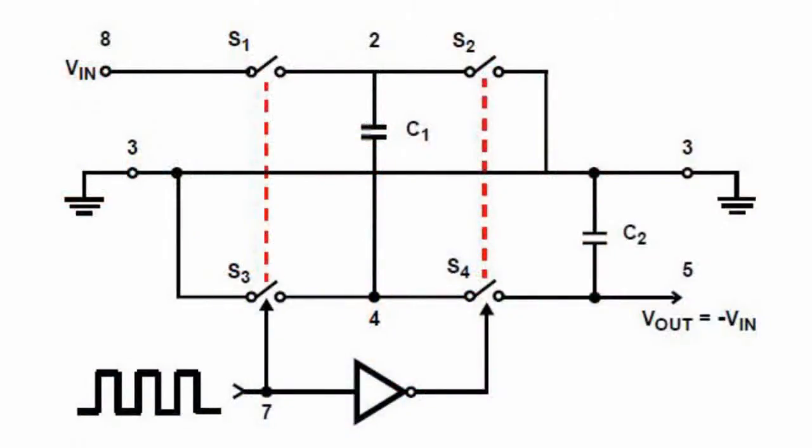An example of one is an ICL7660 integrated circuit. The operating principle of the integrated circuit is the ideal inverter mode.